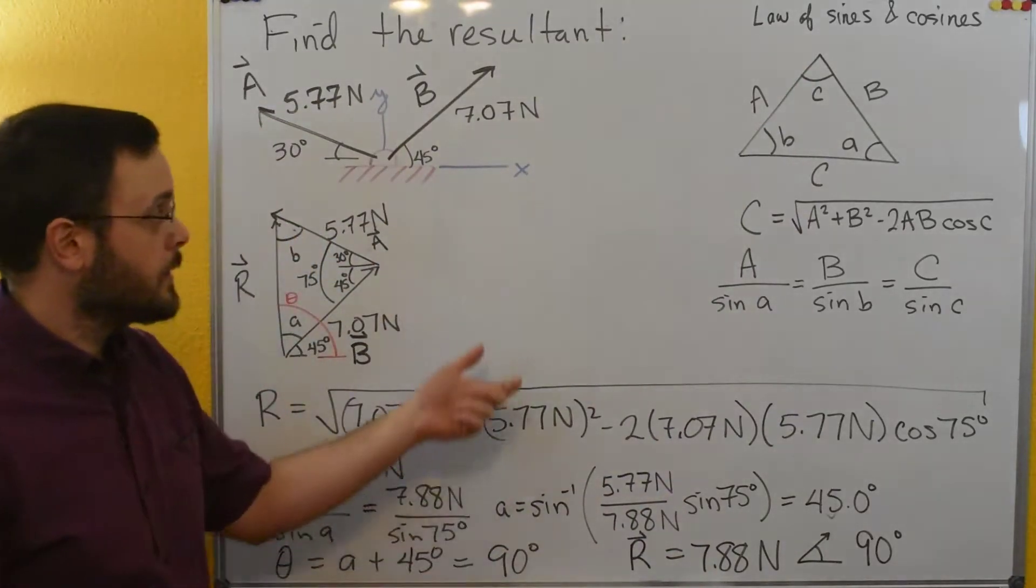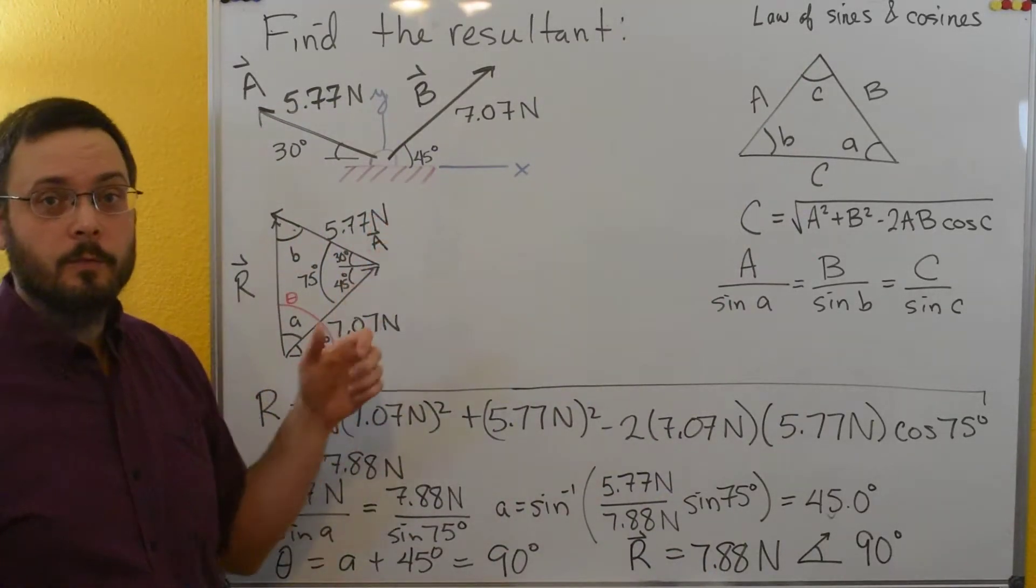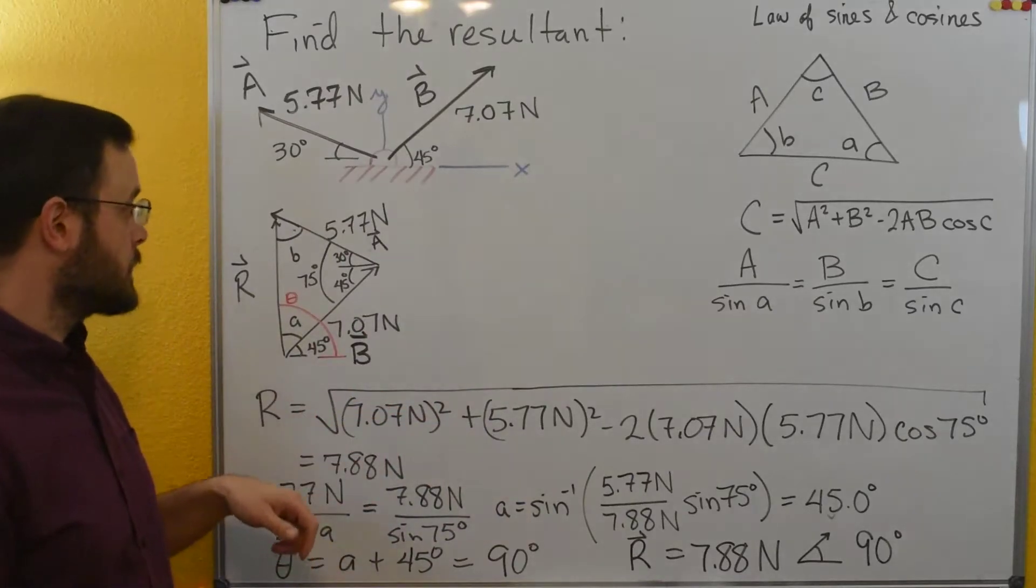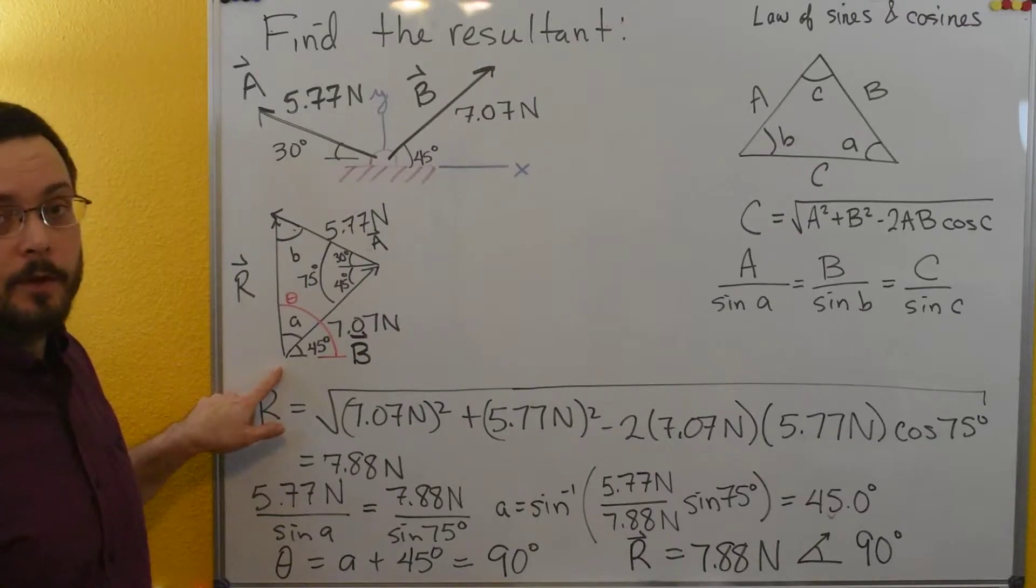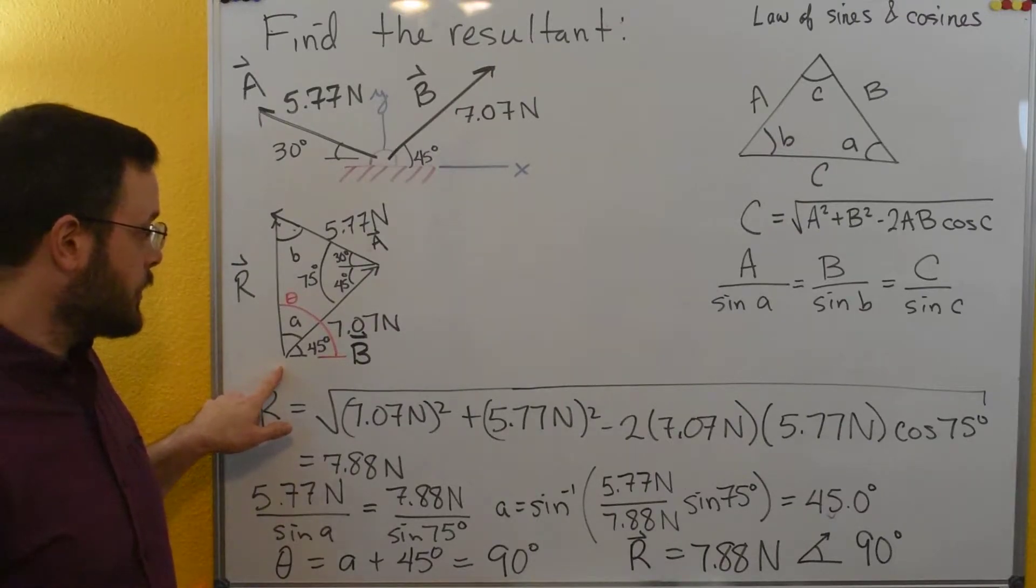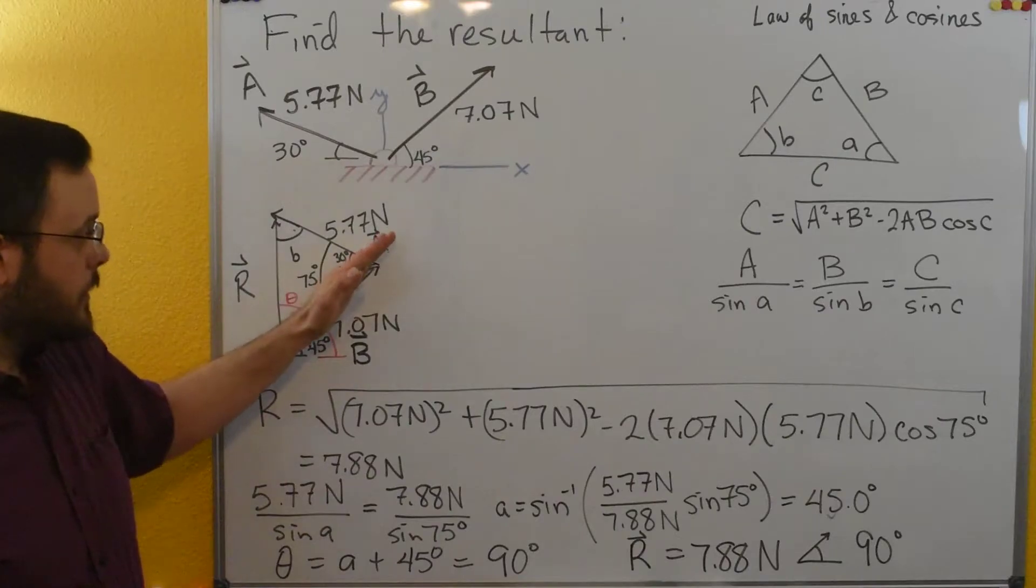So we can apply that with this one. We just need to rearrange our vectors a little bit. So we're going to start with one of the two vectors. So I started with vector b, the 7.07 newtons, and I drew it here.